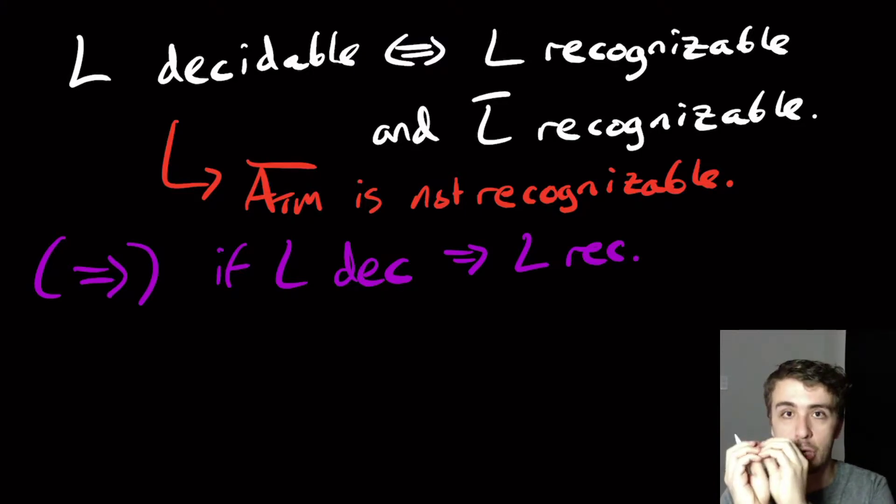And that just comes straight from the definition. Decidable means that the machine for it must always halt on all inputs, whereas the recognizable one only has to halt on the ones in the language. And the ones not in the language doesn't have to do anything with.